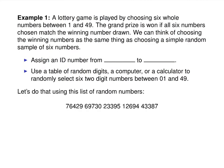For example, suppose we have a lottery game where you play by choosing six whole numbers between 1 and 49. You win the grand prize if all six numbers chosen match the winning numbers drawn. We can think of choosing the winning numbers as the same thing as choosing a simple random sample of six two-digit numbers. First, assign each number an ID from 01 to 49.